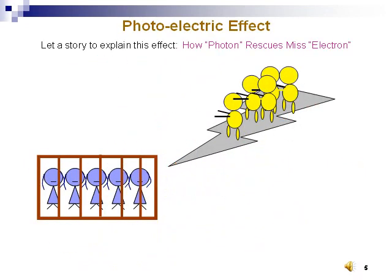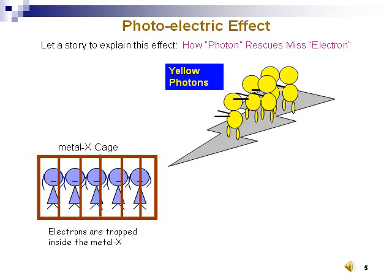To understand photoelectric effect, let us listen to a story. A man dressed in yellow, we call him yellow photon. He wanted to rescue a girl called Miss Electron. She was trapped in a metal cage. This metal cage was made of X material.